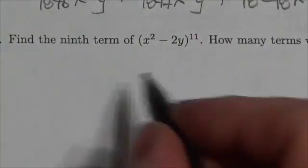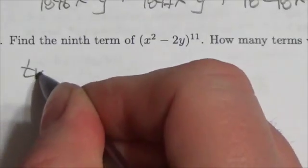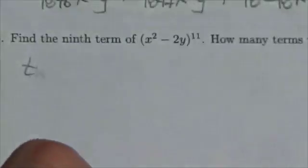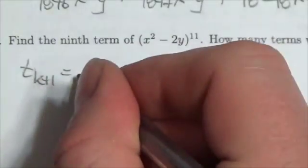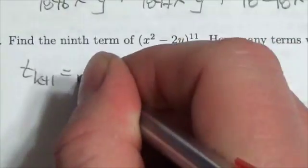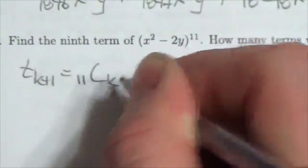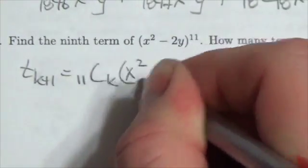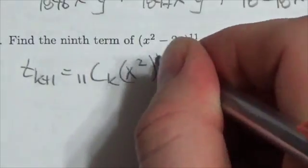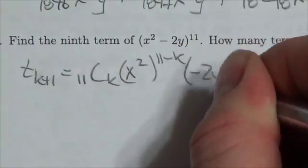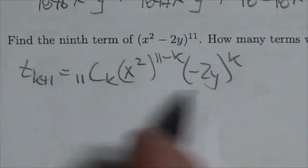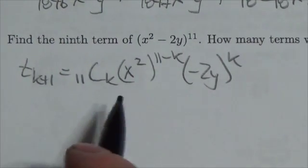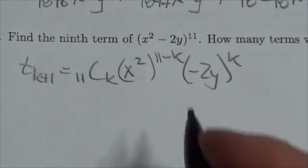Now, to get the ninth term, I'm going to use my general form. So this is going to be t sub k plus 1 will equal, in this case, n is going to be 11, choose k, first term to the 11 minus k, second term to the k. Okay, that's the way our formula is going to work there, and I'm filling in some of the pieces as well here.